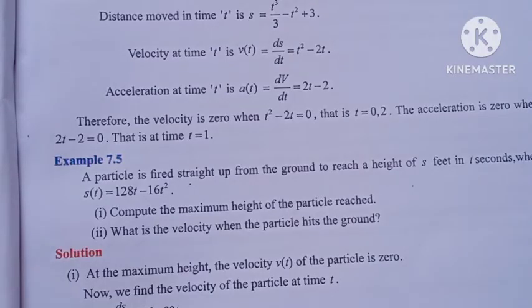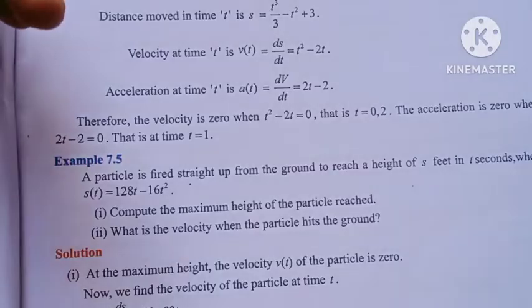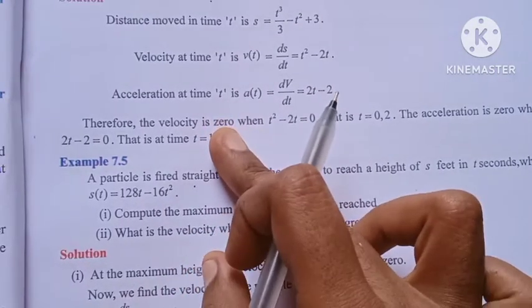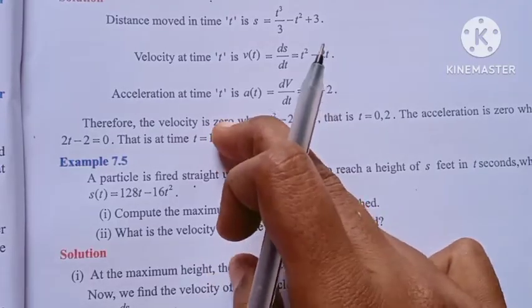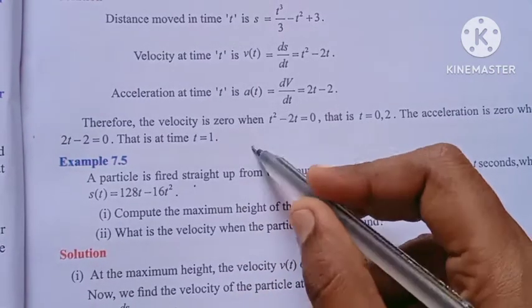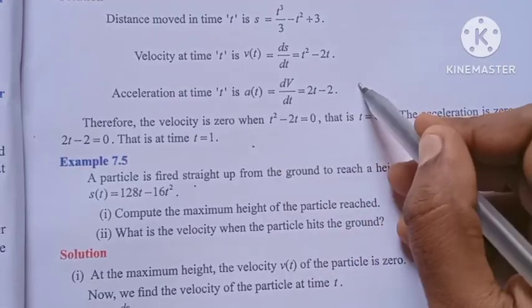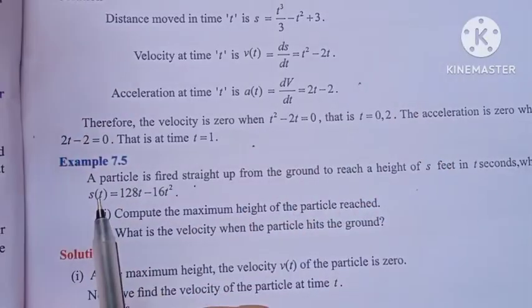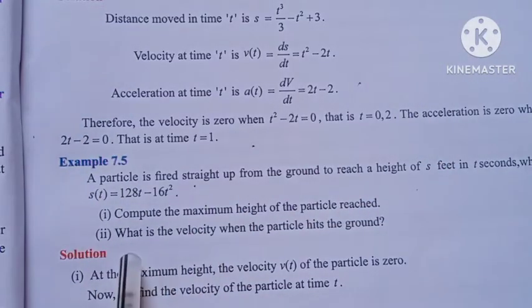At the maximum height, the velocity is zero. That is the condition — when the particle reaches the maximum height, velocity is zero. The second question asks: what is the velocity when the particle hits the ground?